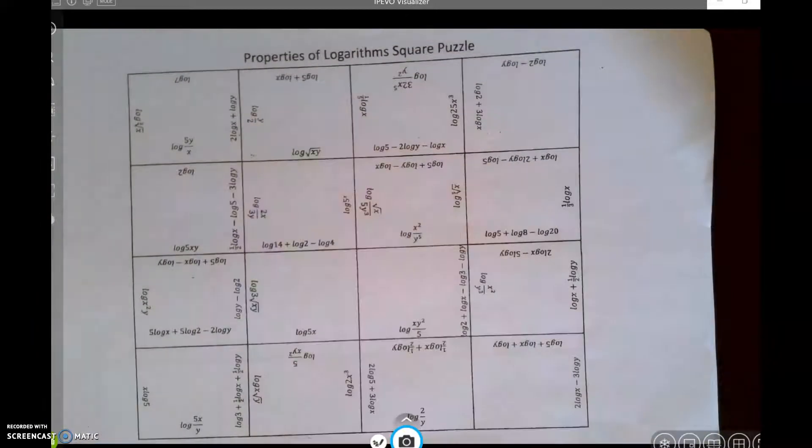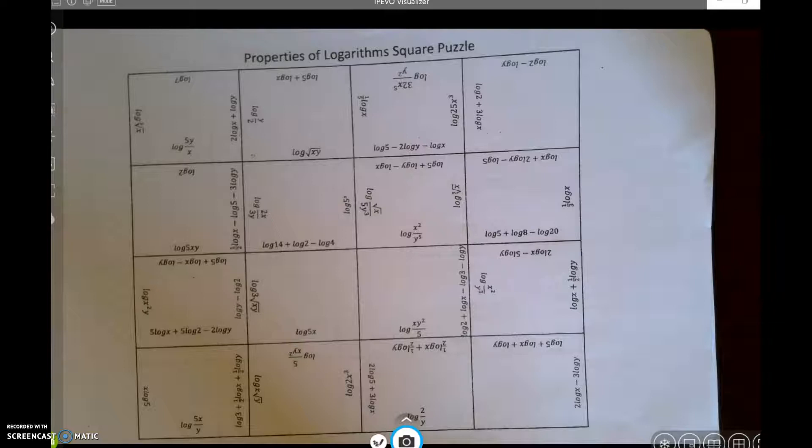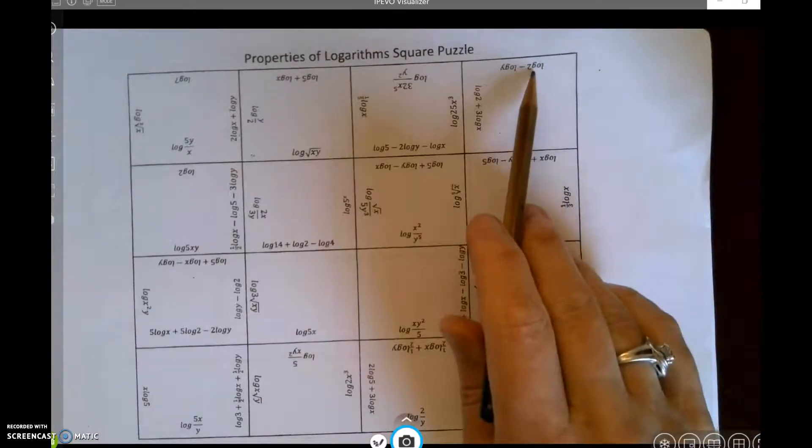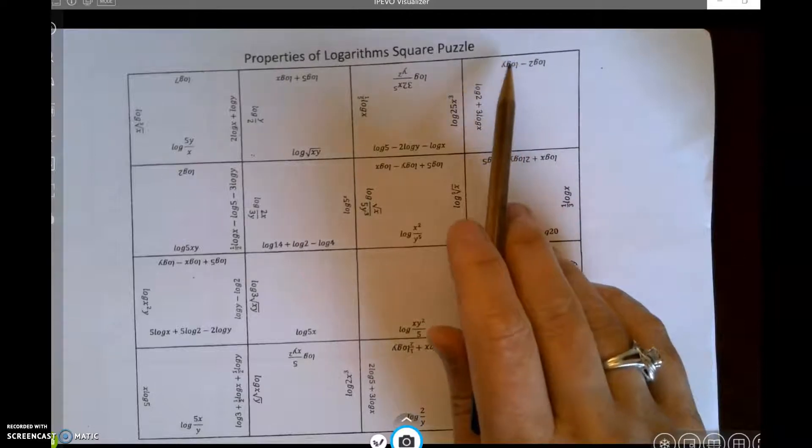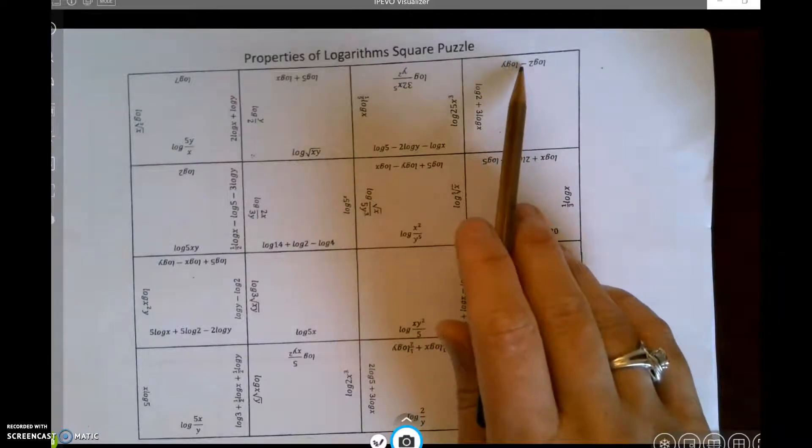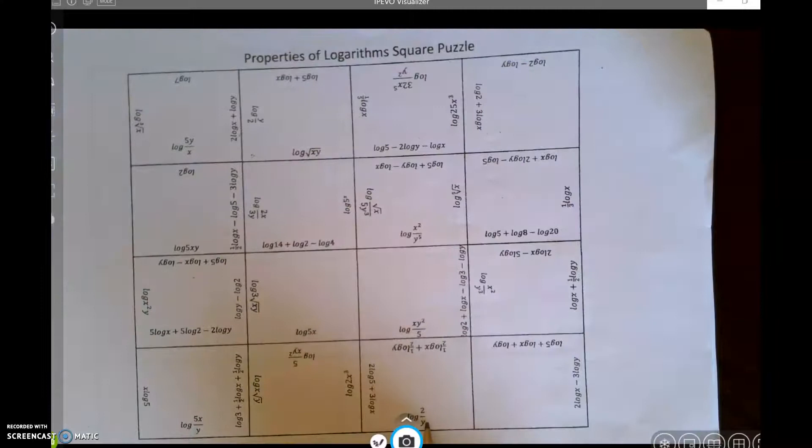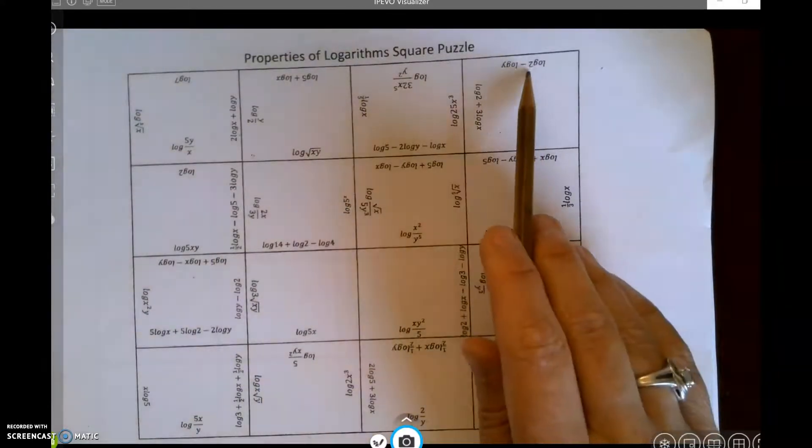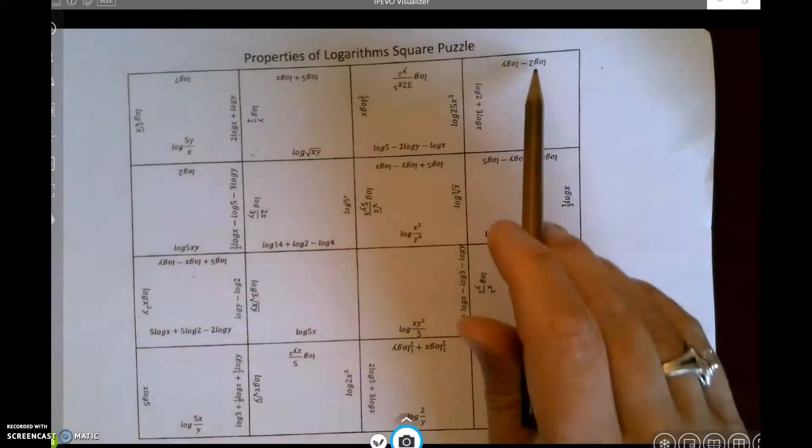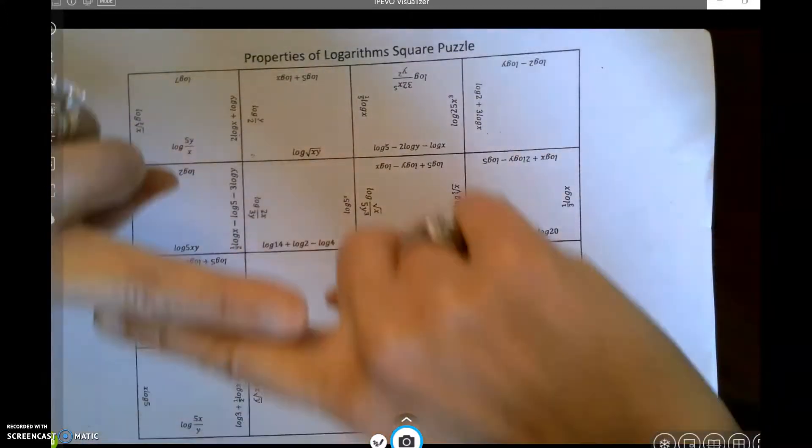What you're doing is you're trying to match up an expanded logarithm with a condensed logarithm. So let's see if we can find one and do that real quickly. Let's just pick this one right here. This says log of 2 minus log of y, and I know subtraction means division, which would mean this is log of 2 divided by y, which is right here. When I put these puzzle pieces into my puzzle, these need to match up like side by side like this.